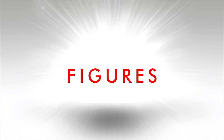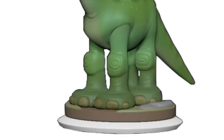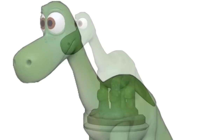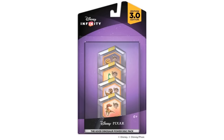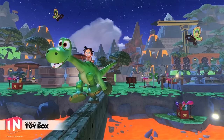Now let's talk about scrapped figures. Arlo from The Good Dinosaur was originally planned to be a playable character in 3.0. It was later revealed that higher-ups at Disney didn't have high expectations for the film, so he was never released. Spot was the only playable character from the film, and Arlo appeared as a power disc in the form of a mount.